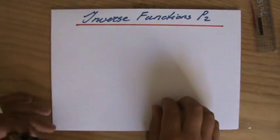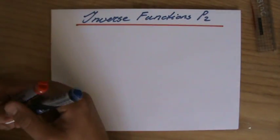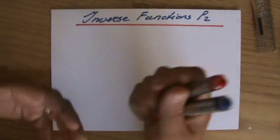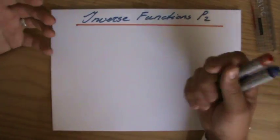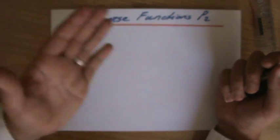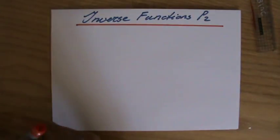So we are still doing inverse functions. This is part two. We have two strategies: swapping x and y and making y the subject again, or with a flow diagram. I've shown you those two strategies in the first part.